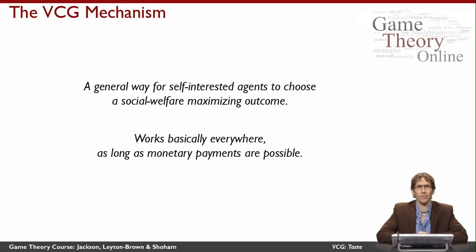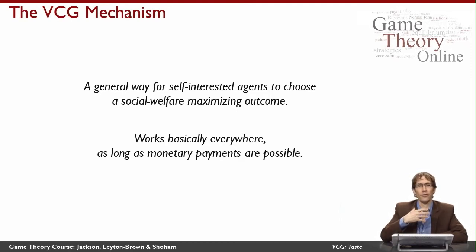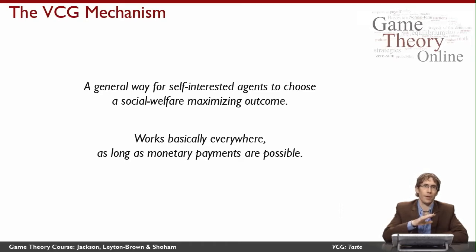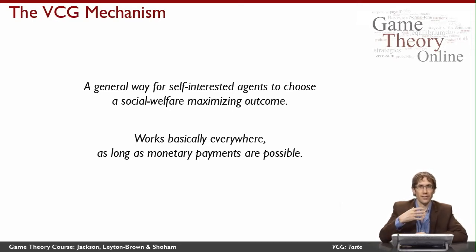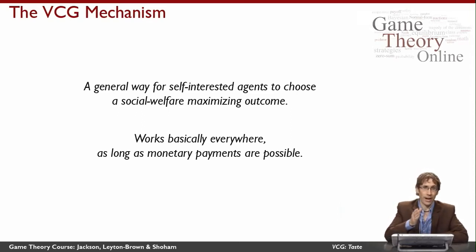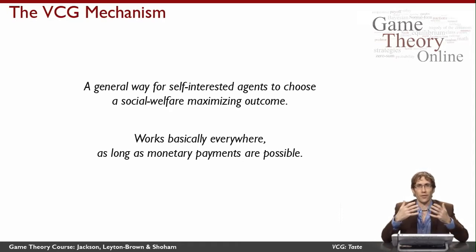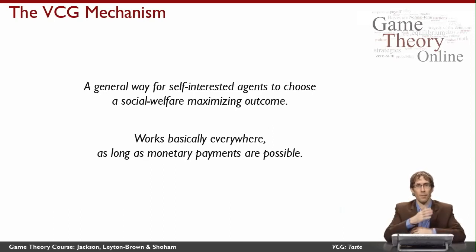So what is the Vickrey-Clarke-Groves mechanism for? Essentially, it solves a problem that we encounter in mechanism design pretty often, where I as the designer am interested in implementing an efficient outcome. I have a set of self-interested agents, each of whom has private information about how much they value each of the different things that could happen in the world. What I desire is to always pick the thing that maximizes the sum of the values the agents actually have, which I as the designer don't know. So what I need is for the agents to tell me how much they value different things.